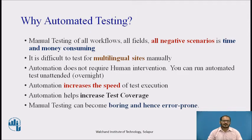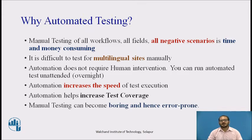Manual testing of all workflows, all fields, and all negative scenarios is time and money consuming. It is difficult to test multilingual sites manually — for example, a multilingual WordPress website that serves the same content in multiple languages, automatically redirecting users based on region, or allowing users to select their preferred language via a drop-down. Automation does not require human intervention.